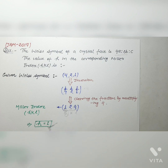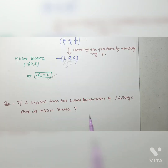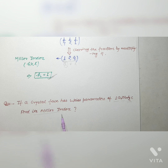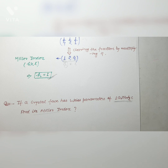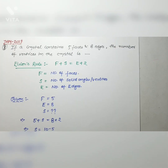Here is another unsolved problem: if a crystal face has parameters 1a, 2b, and 1/2 c, find its Miller index. Please solve this problem and let me know in the comment section what the Miller index is. If you are unable to solve this question, please let me know so that I will cover it in the next video.